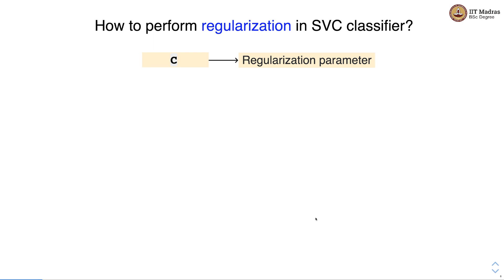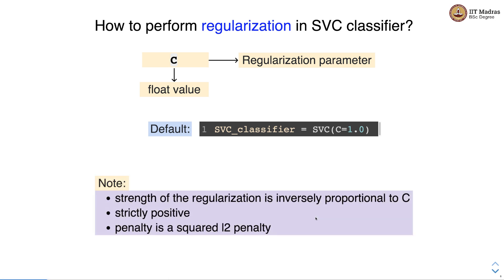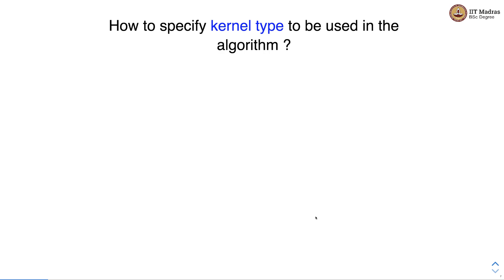To perform regularization in SVC, there is a parameter C which is the regularization parameter and takes a float value. The default value of C is 1. The strength of regularization is inversely proportional to C. C must be strictly positive, and the penalty used is the squared L2 penalty.